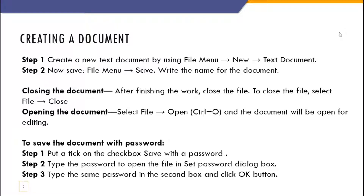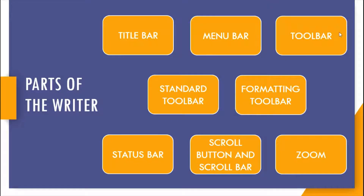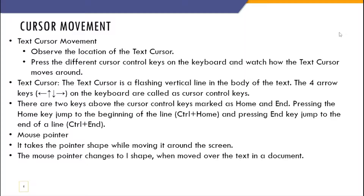Parts of Writer: there are eight parts — title bar, menu bar, toolbar, standard toolbar, formatting toolbar, status bar, scroll bar, and workspace. You have likely gone through these menus before, so I won't explain them in detail here.